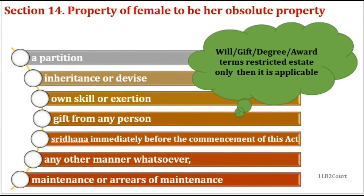Let's see how limited estate works with an example. A Hindu male F dies intestate, survived by his wife (widow) and his daughter. The last male holder is F because he held the property as an absolute owner. After his death, his wife takes the property but holds it as a limited estate. After her death, the property goes to the heirs of the last male holder F, which is again the daughter. So the daughter will take the property after the widow's death.